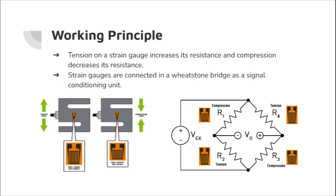Now let's see about the working principle of a strain gauge based load cell. Tension on a strain gauge increases its resistance and compression decreases its resistance. These strain gauges are connected in a wheatstone bridge which acts as a signal conditioning unit.